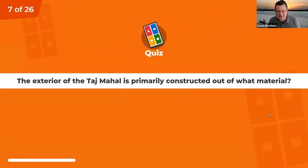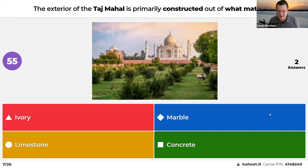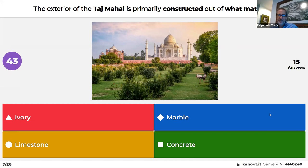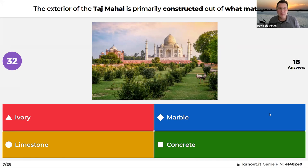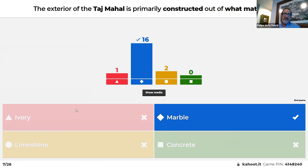The exterior of the Taj Mahal in India is primarily constructed out of what material: ivory, marble, concrete, or limestone? The panelists all agreed it's white and shiny — marble. That's correct! It took over 20,000 people to construct the Taj Mahal over a very long period of time, and involved more than a thousand elephants. The panel got this one right — the first question everyone agreed on!